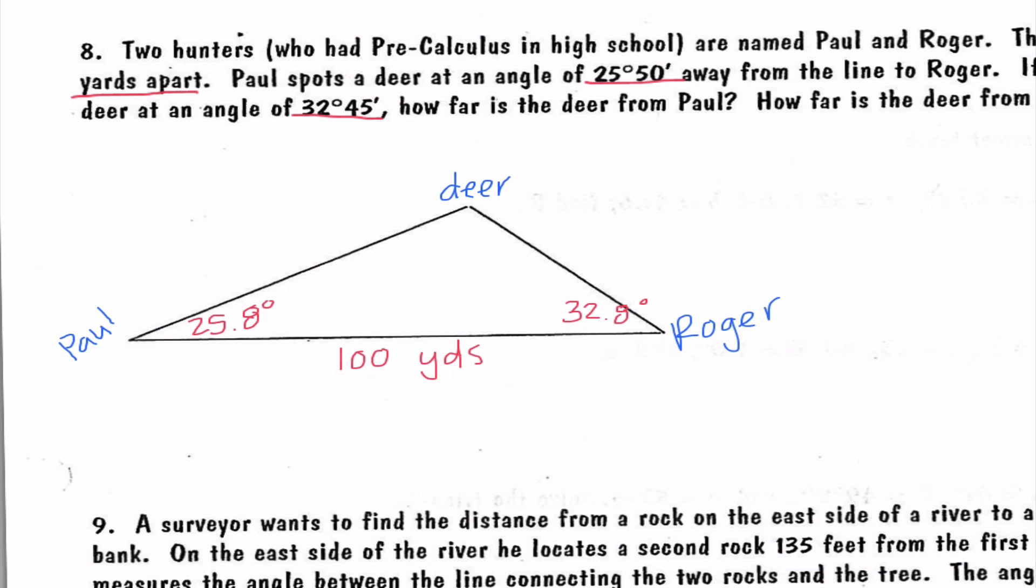And we need to find the distance from Paul to the deer and the distance from Roger to the deer. Looking at this, we kind of said in general when we're only talking about one angle, we use law of cosines. When we're dealing with two angles, we use law of sines. So the fact that I already know two angles is telling me we are most likely going to use law of sines here.